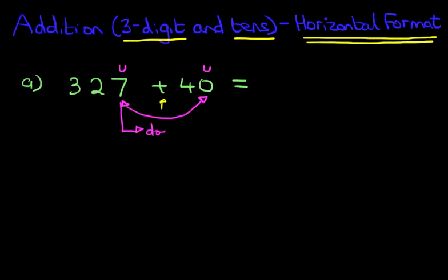The units does not change. Whenever you're adding tens, the units do not change because it's 0. So now let's move on to the tens. Here we're adding 2 and 4. 2 plus 4, the answer is 6. And the hundreds, 3 remains the same. Now that's not always the case. The hundreds can change, and we will come to that shortly. But in this example, 327 plus 40 is 367.